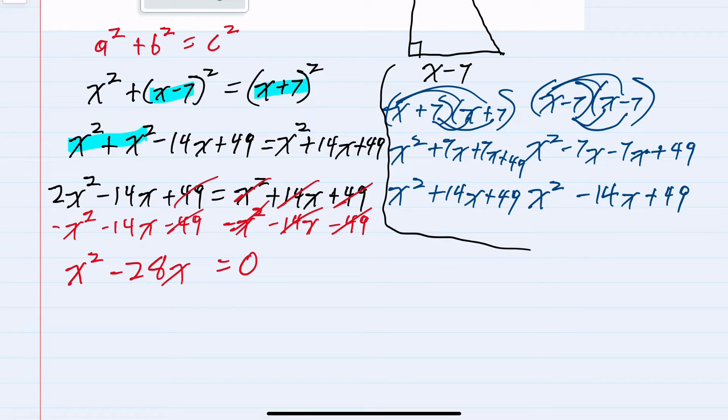So our quadratic has now been simplified x squared minus 28x equals zero. From here I could use the quadratic formula or since this factors nicely into x times x minus 28 equals zero.